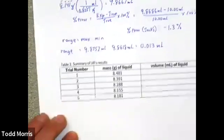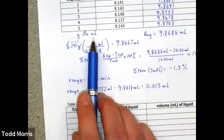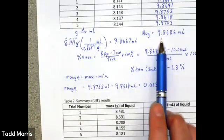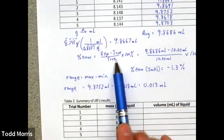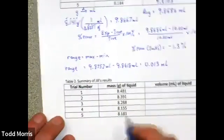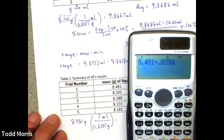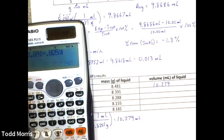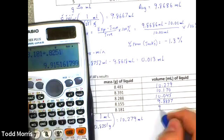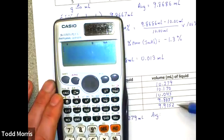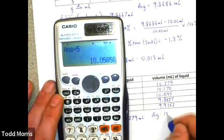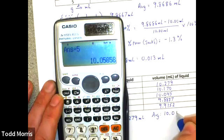She also determined the mass of the same liquid five times. We'll first convert each of those masses into volumes by dividing by the density of the liquid. Find the average of those volumes. Use that average as part of a percent error calculation. And then finally, determine range by taking the maximum volume, subtracting from that the minimum volume. And we are keeping one extra digit in these calculations to avoid rounding errors. So, with five volumes of Jill's data, we can find then her average volume that she delivered was about 10.059 milliliters.